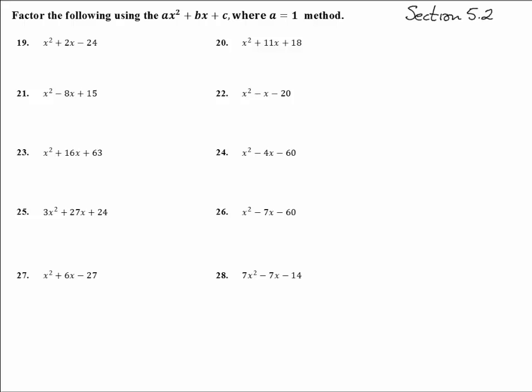We're here in section 5.2 looking at the answers to number 19 through 28. Factor the following using the ax² + bx + c where a equals 1 method. So this is where we just start with an x² at the beginning and remember this is where we're able to go fast where we just take the things that times to c and add to b and put them in here.